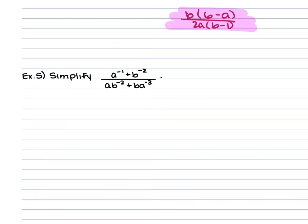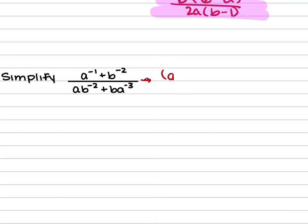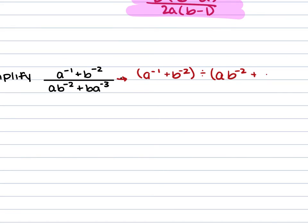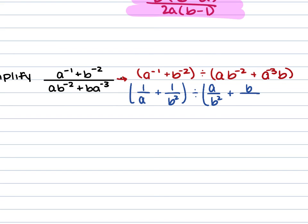For example 5, we are given a to the negative first plus b to the negative second, all over ab to the negative second plus ba to the negative third. Rewriting as a division problem: (a to the negative first plus b to the negative second) divided by (ab to the negative second plus ba to the negative third). Taking the reciprocal of those terms to get positive powers gives us 1/a plus 1/(b squared), divided by a/(b squared) plus b/(a cubed).